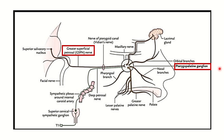In this picture, we can see the lacrimal gland, which is located on the lateral side of the eye. The parasympathetic fiber is coming here, arising from the pterygopalatine ganglion.